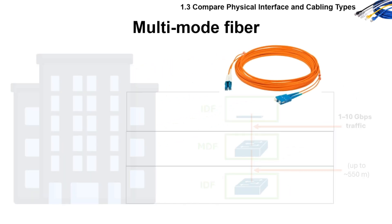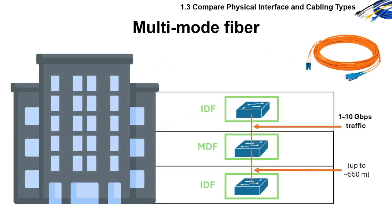An example of using multi-mode fiber is its use inside buildings or campuses, like connecting IDFs to MDF. Multi-mode is great for 1 to 10 gig traffic within a few hundred meters. If you run fiber from the first floor to the third floor in an office building, multi-mode is ideal and budget-friendly.